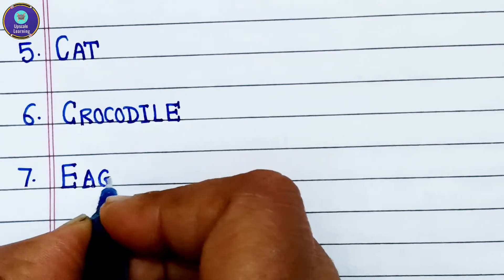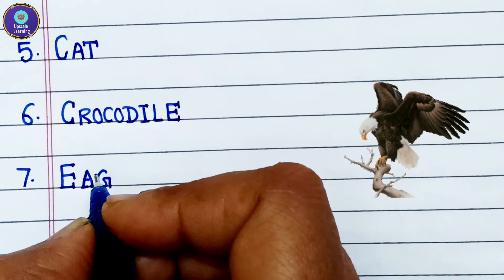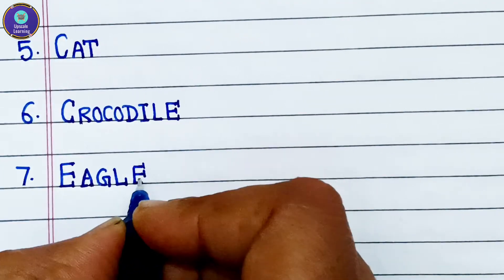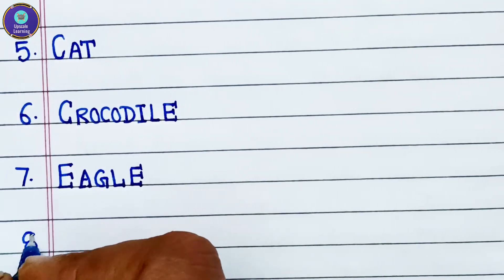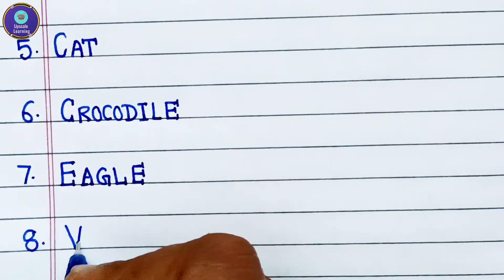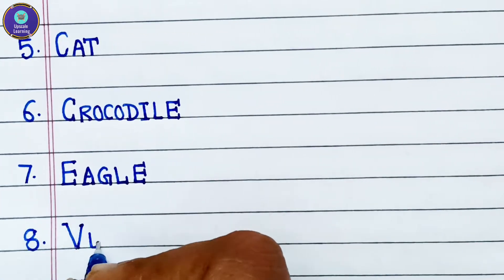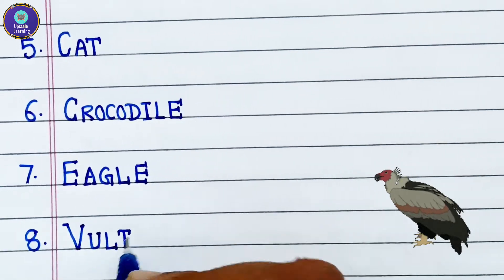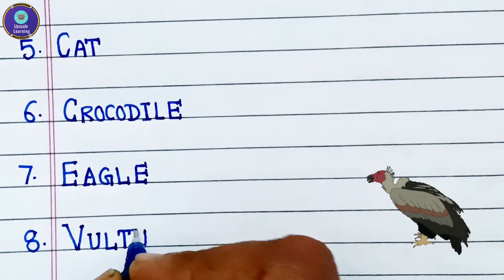E-A-G-L-E, eagle. Eighth one is vulture, V-U-L-T-U-R-E, vulture.